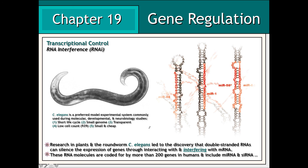Another means of transcriptional control of the eukaryotic genome involves the activity of small, double-stranded RNA molecules that can interfere with the messenger RNA being translated into a polypeptide product. Therefore, these molecules are involved in a phenomenon known as RNA interference or RNAi.